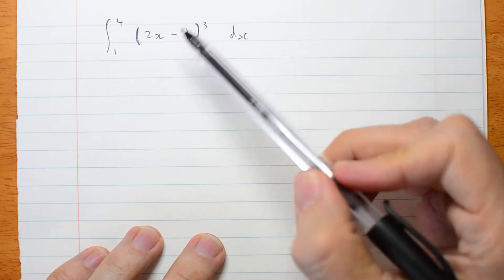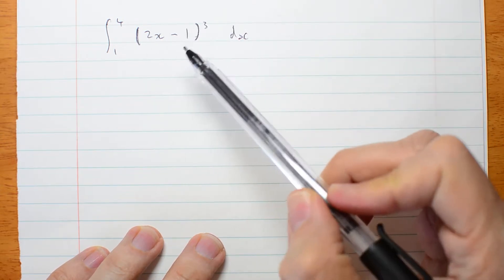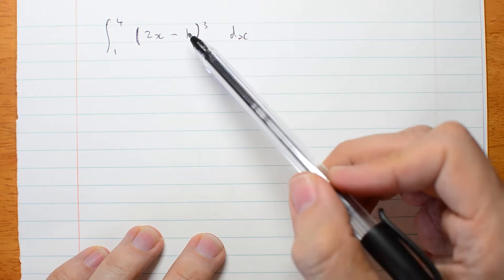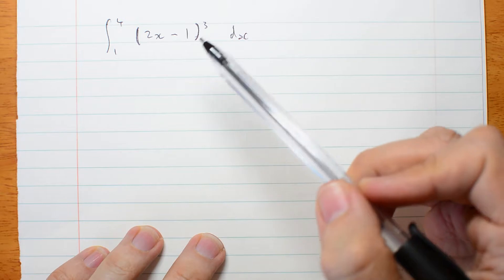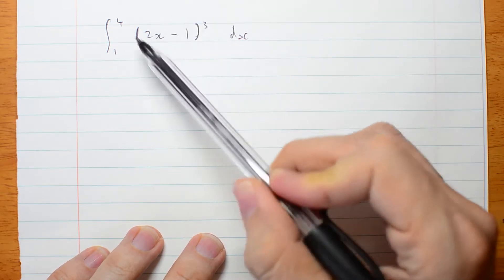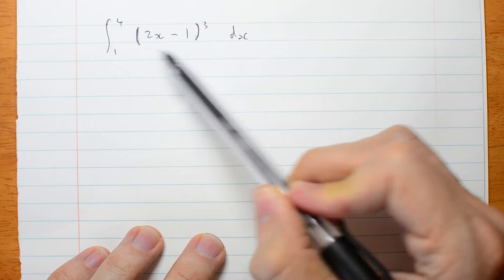It's a little bit trickier. In fact, it's actually leading towards the next thing we're going to do, which is integration by substitution. Effectively, we're going to use the chain rule backwards. But because this is linear inside the brackets, it's actually still quite simple.